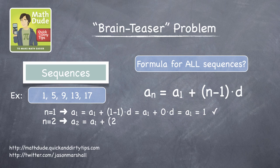For n equals 2, a sub 2 equals a sub 1 plus d. That's 1 plus 4 equals 5. It works again.